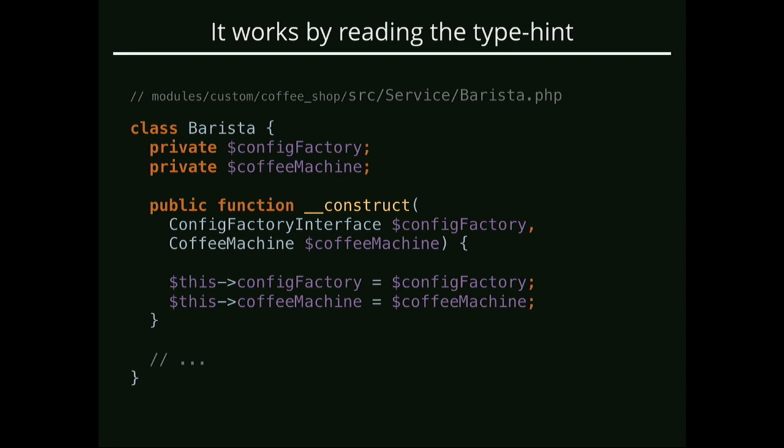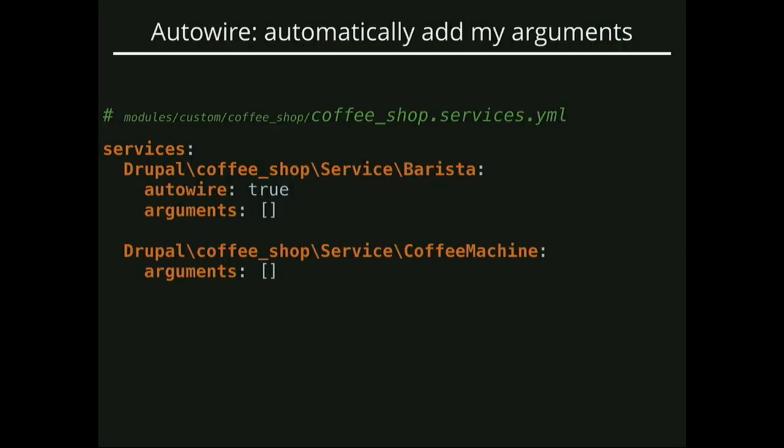There are actually two different pieces of logic in Drupal and Symfony that handle auto-wiring. The old way — which is what we're using right now — looks at your type hint, scans all the services in the container, and if one of the services implements that interface or has that class, and it finds exactly one that matches, it passes it to you. If it finds zero or two, you get an error. So it looked and found exactly one service implementing the ConfigFactory interface, and likewise found only one CoffeeMachine service. Our services file is starting to get very slim — just the class names.